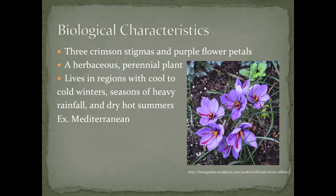The crocus sativus flower is characterized by its purple petals and its three crimson stigmas. This stigma will need to be plucked and then dried in order to make saffron spice. The crocus sativus plant is a herbaceous perennial plant which lives in regions with cool to cold winters, seasons of heavy rainfall, and dry, hot summers.